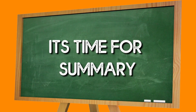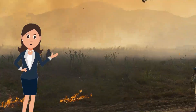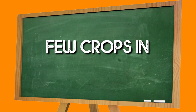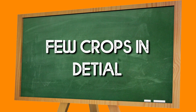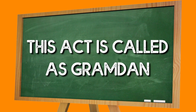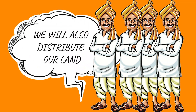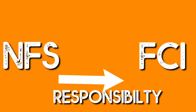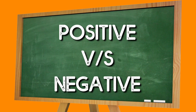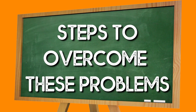So, this was all for this chapter. Let's summarize: we discussed different agricultural practices and methods, then three cropping seasons — Rabi, Kharif, and Zaid. After that, we studied some major crops in detail, then moved to technological reforms. We studied a case study about landowners distributing land to landless farmers. Then we discussed food security, the National Food Security System, the concept of globalization and its positive and negative impacts, and finally some steps to solve agricultural problems.